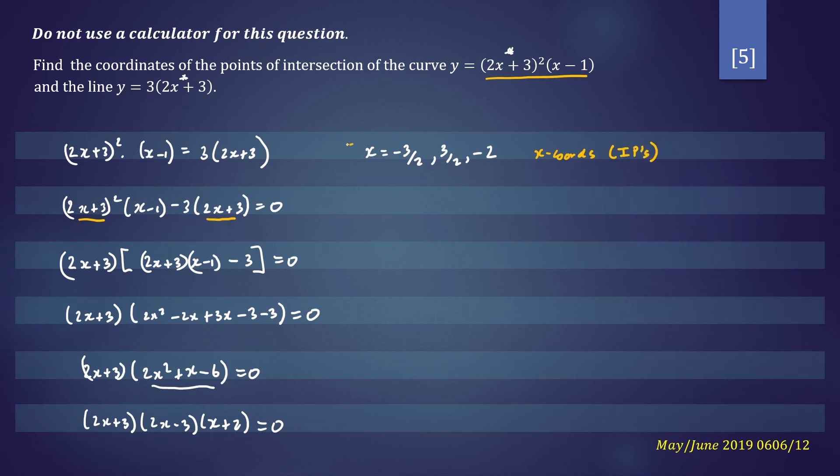So to find the y-coordinates, we'll just substitute those values into that linear equation. So if x equals negative 3 on 2, y will be equal to 3 times 2 times negative 3 on 2 plus 3. Therefore, y will be equal to 0.